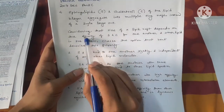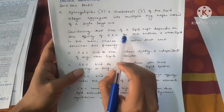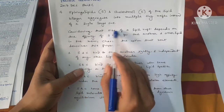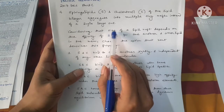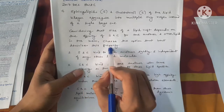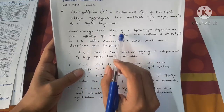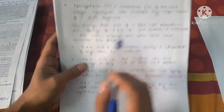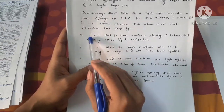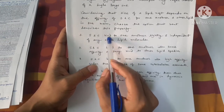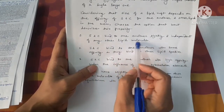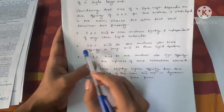Considering that the size of the lipid raft depends on the affinity of sphingomyelin and cholesterol for one another and other lipids in the membrane, choose the option that best describes this property — how will you know the size of these lipid rafts? Option one is: sphingolipids and cholesterol bind to one another tightly and independent of any other lipid molecules.